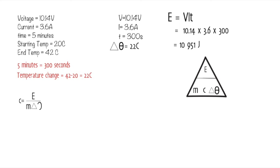You stick in the various values that you have for the energy, for the mass, for the temperature change to make the calculation. So it's 10,951 joules, which is the energy, divided by one, which is the mass of one kilogram, and the temperature change was 22. When we put that in the calculator we'll end up with our value, which is 492 joules per kilogram degree Celsius. And that is how you work out specific heat capacity.